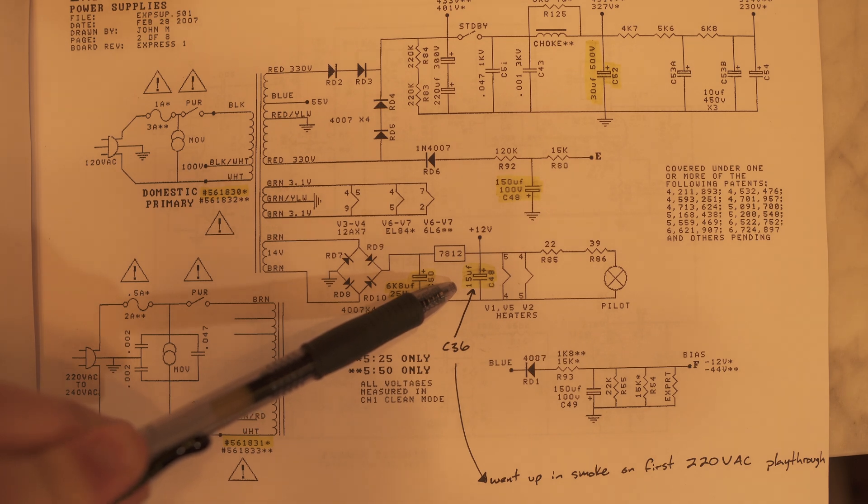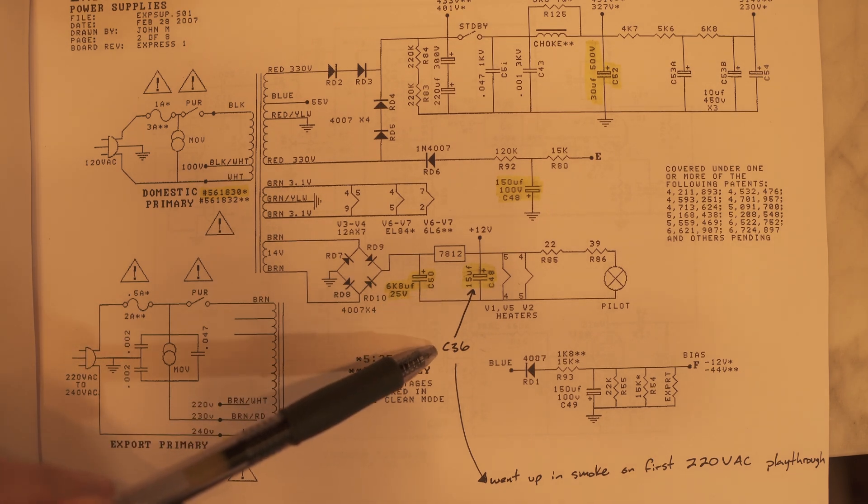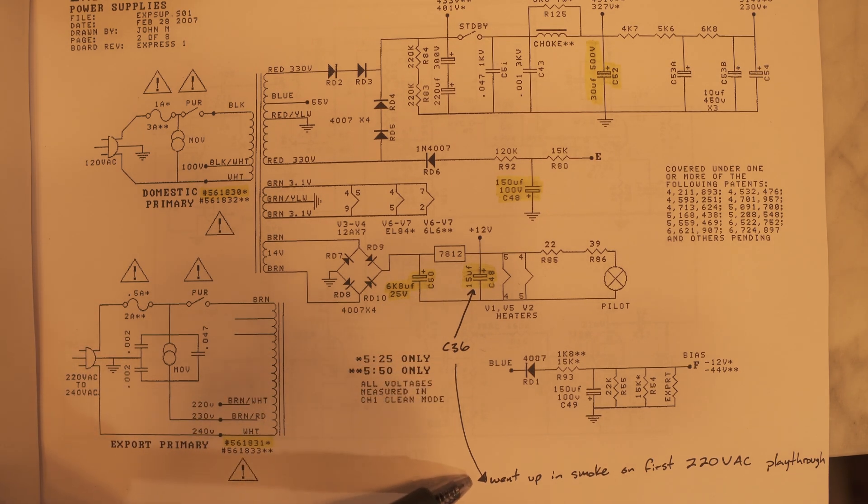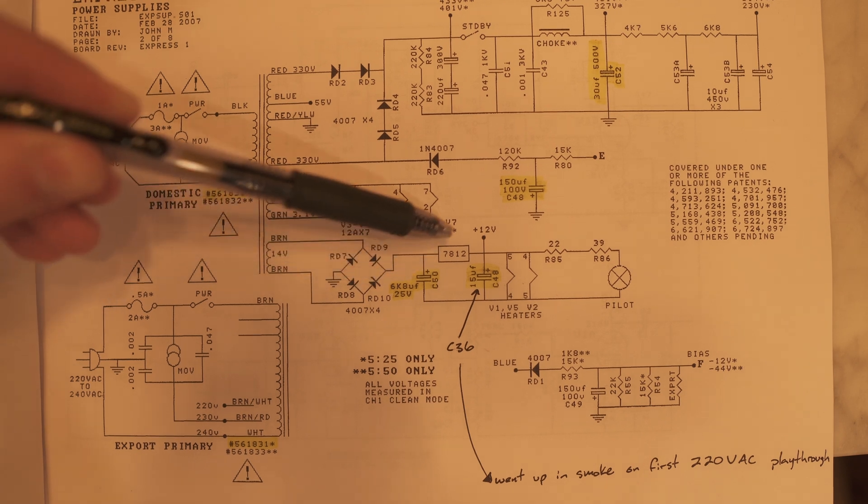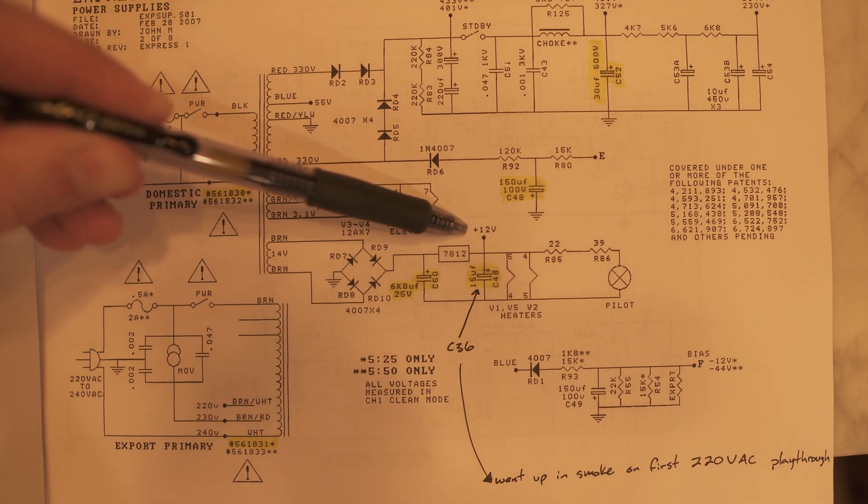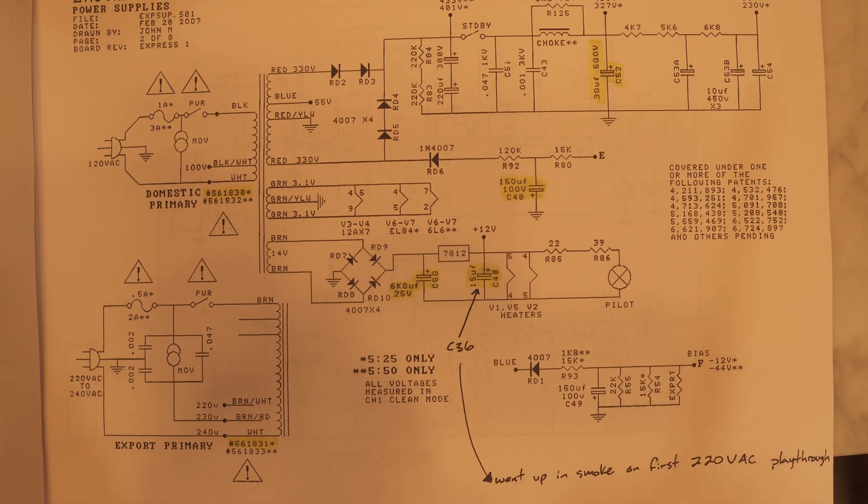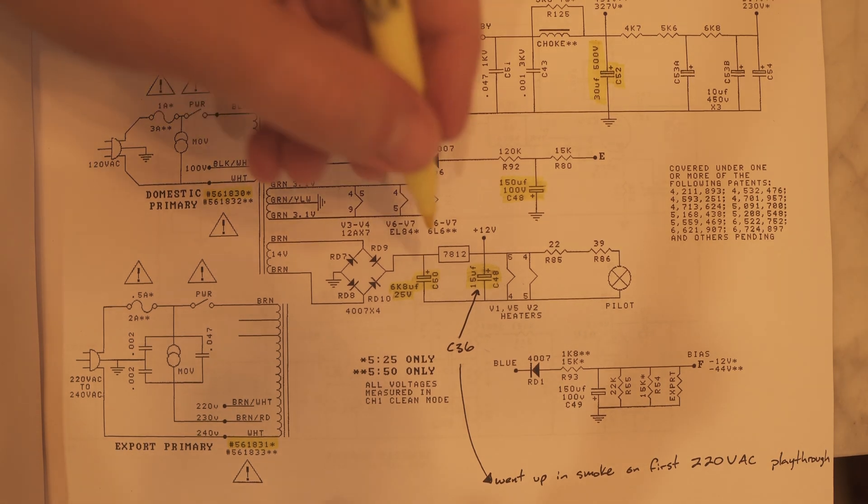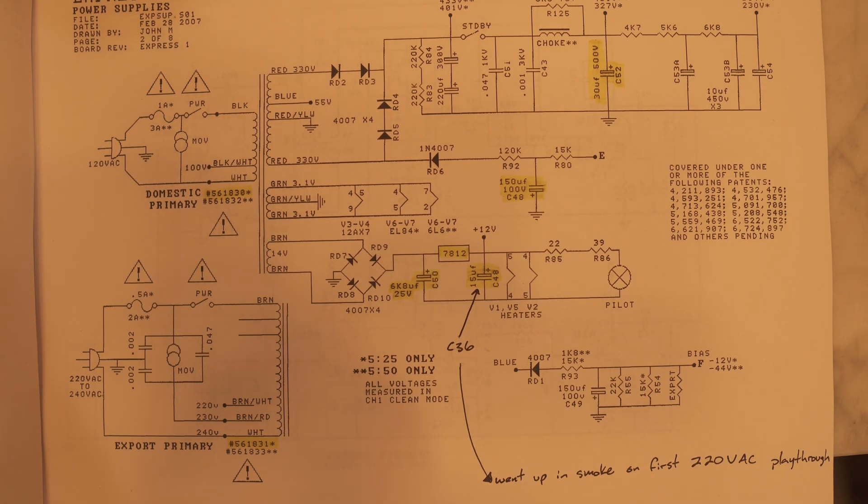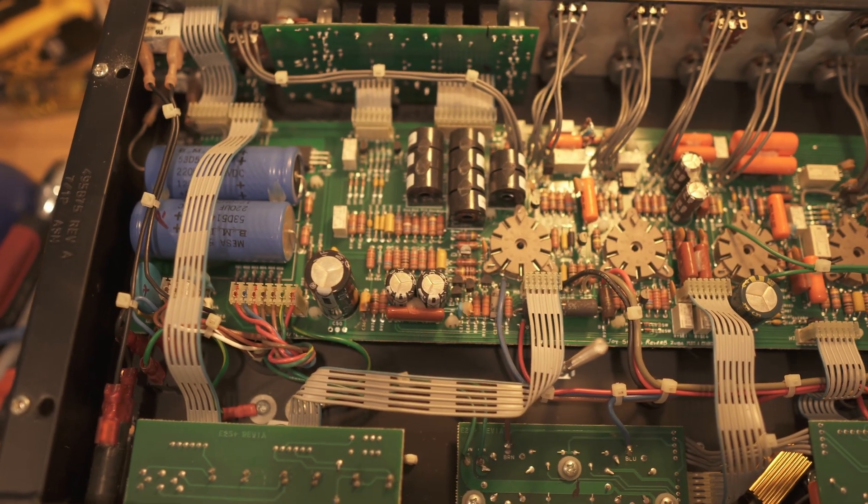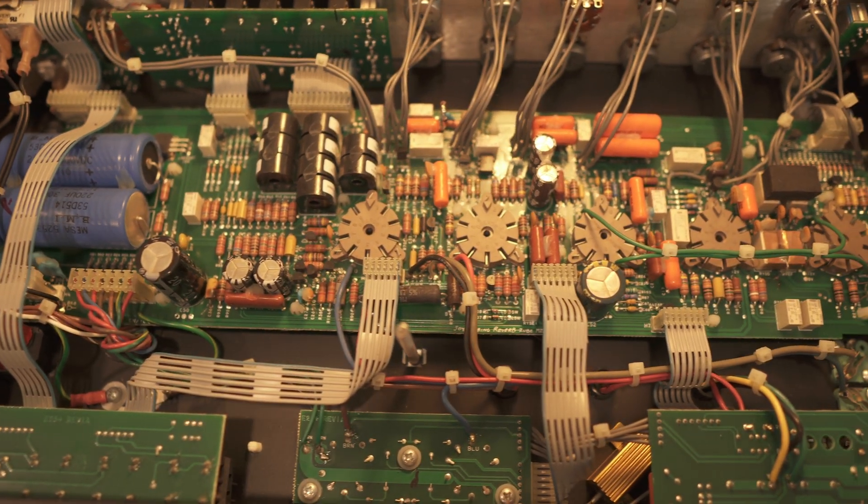So it's actually in the heater supply, C36. That's what went up in smoke on the first proper wall voltage power-up. And that is in the regulated supply. So it's a regulated 12 volts. There's the 7812, which is the linear voltage regulator. And then there's that big 6800 microfarad 25 volt C50 cap on the input. So that's sort of like your reservoir cap. And then the C36 is what shorted.